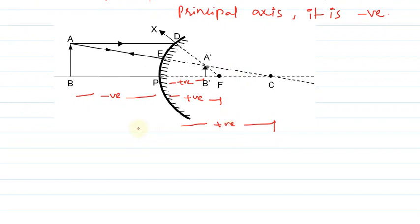Now for this question: the magnification is plus one-third, the image is virtual, and the object is placed in front of the mirror at a distance of eighteen centimeters, so the object distance u is minus eighteen centimeters.